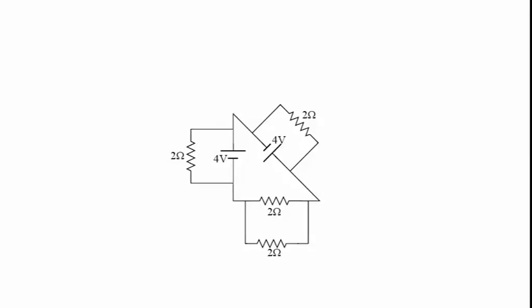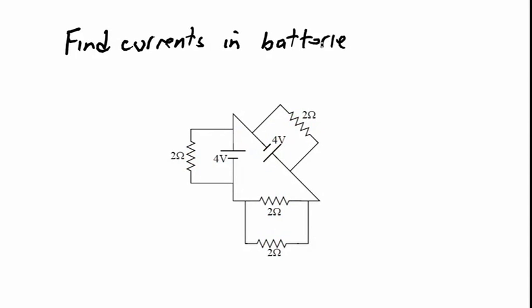We start with a circuit with a series of batteries and resistors. All the resistors are 2 ohms, and the two batteries are 4 volts. The question I want to answer is: what are all the currents in this circuit? More specifically, I'm asked to find the currents in the batteries — the current there and the current there.